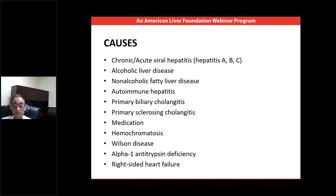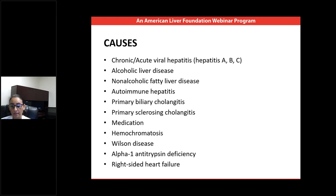Genetic disorders, including hemochromatosis, which is a disease related to an excess of iron in the liver. Wilson's disease, which is a disease related to an excess of copper accumulation in the liver. And alpha-1 antitrypsin deficiency, another genetic disorder related to the inability of the liver to transport a protein, which sits in the liver and irritates it, leading to inflammation and scar tissue. Heart failure is another condition associated with inflammation of the liver and chronic liver disease.